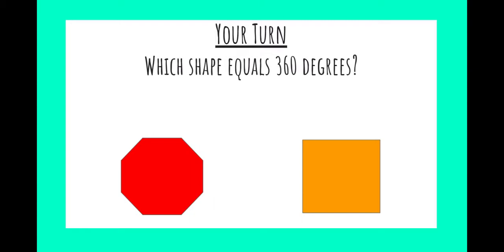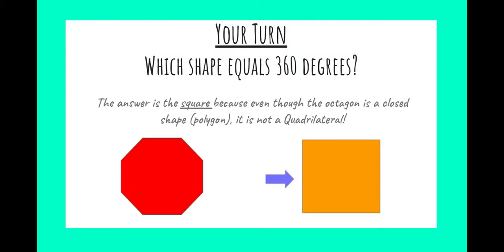Here's another one for you. Which shape that you see there equals 360 degrees? The answer is a square — or more precisely, any quadrilateral. Because even though the octagon on the left-hand side is a closed shape, which means it's a polygon, it is not a quadrilateral. A quadrilateral has four angles and four sides, and therefore a quadrilateral equals 360 degrees.